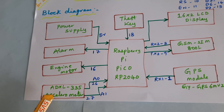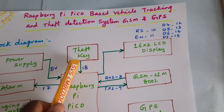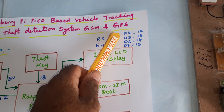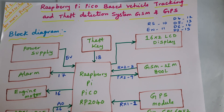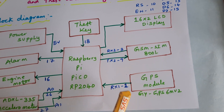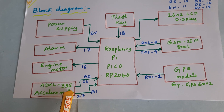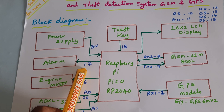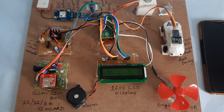The system uses an ADXL335 accelerometer to detect rash driving and a theft key connected to GPIO pin 18. A 16x2 LCD display is connected to RS, enable, D4-D7 on GPIO pins 10-15. Serial communication 2 is connected to RX2/TX2 for GSM, and GPIO 89 for GPS connected to RX1. The ADXL335 ADC is connected to A0/A1 on pins 26 and 27. Engine is on pin 16, alarm on pin 17, and theft key on pin 18.